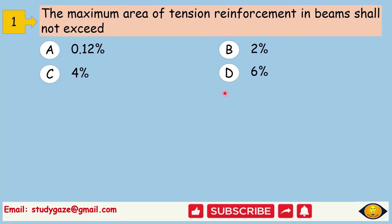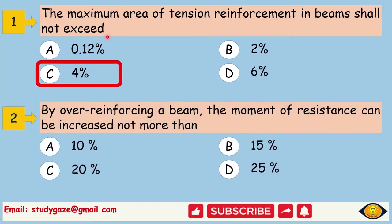The maximum area of tension reinforcement in beams shall not exceed. The answer is 4%. By over-reinforcing a beam, the moment of resistance can be increased not more than. The answer is 25%.